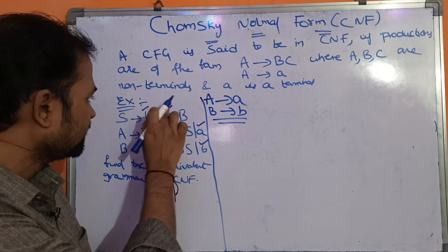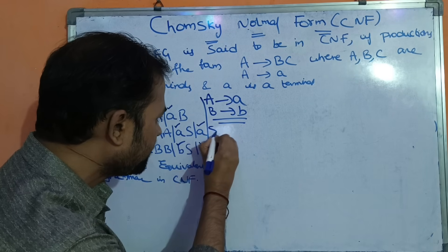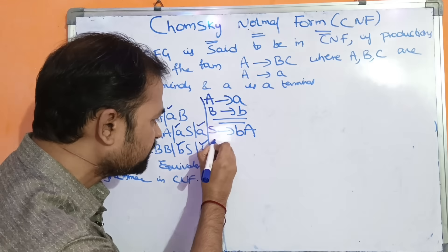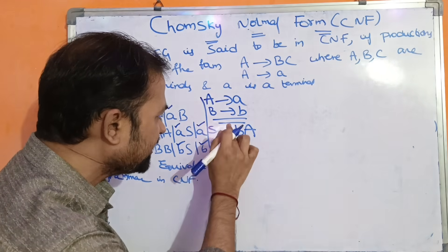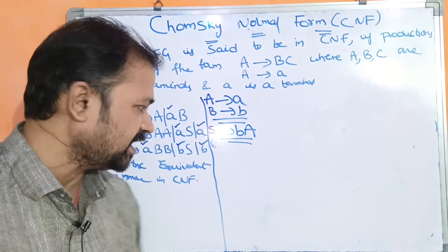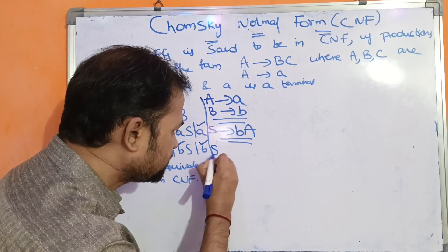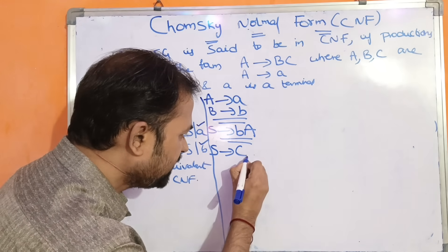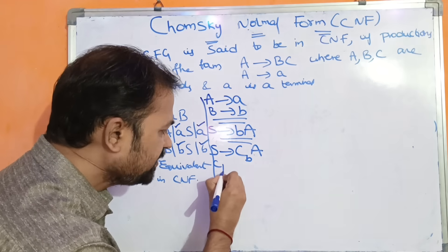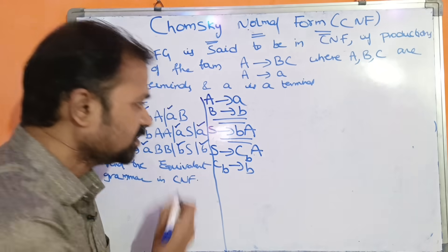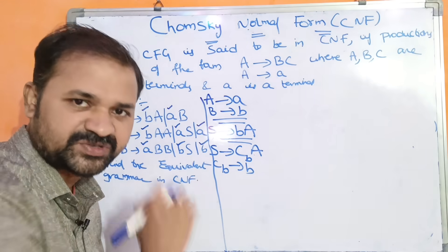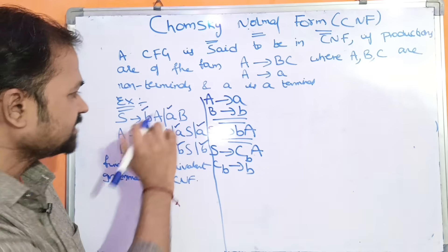For the first production S implies BA — this B is a terminal symbol. We replace it with a non-terminal CB, so S implies CBA, where CB implies B. So we replace S implies BA with these two productions.